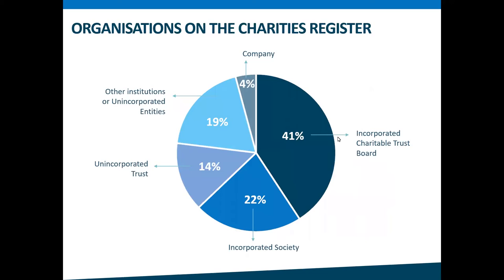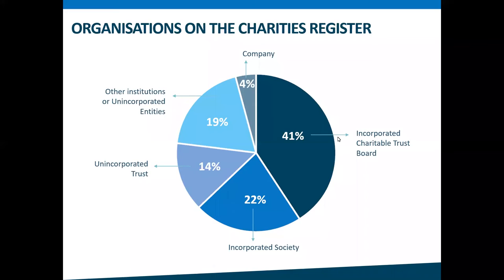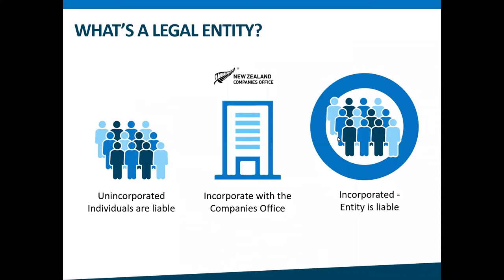The pie chart on the screen shows the types of charities listed on the charities register. Starting from largest to smallest: incorporated charitable trust boards are 41% of the register, incorporated societies are 22%, unincorporated societies and other unincorporated charities make up 19%, unincorporated charitable trusts make up 14%, and limited liability companies are the smallest at just 4%. The most important thing this graph tells us is that 63% of all organizations on the register are incorporated, which means they're legal entities.